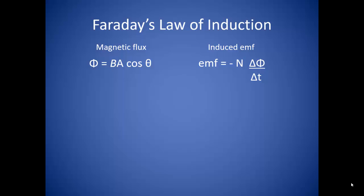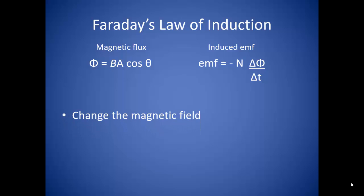There are three ways that we can induce an electromotive force. The first is to change the magnetic field. If we increase the magnetic field, then the magnetic flux will increase. If we decrease the magnetic field, then the magnetic flux will decrease. Either way, this is a change in magnetic flux, and so there will be an induced EMF.